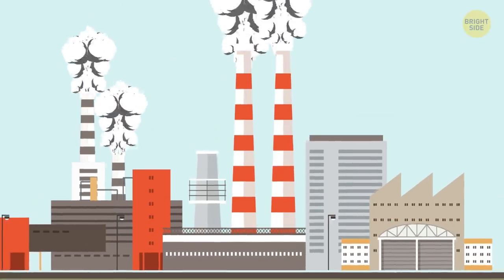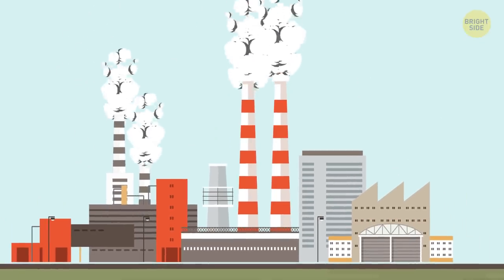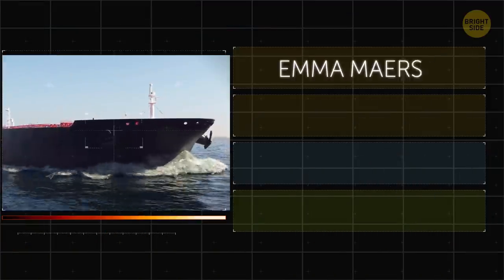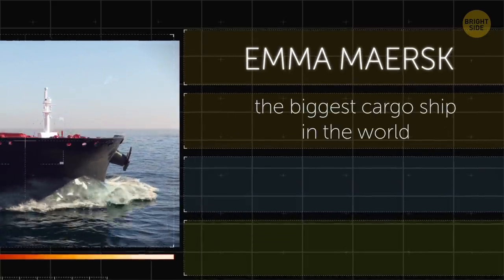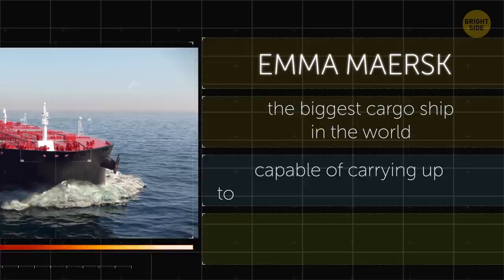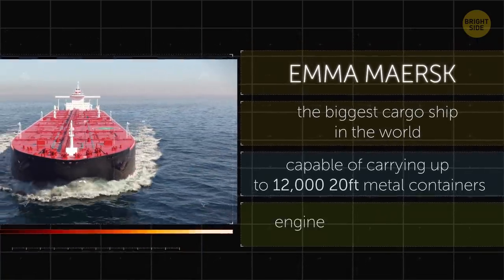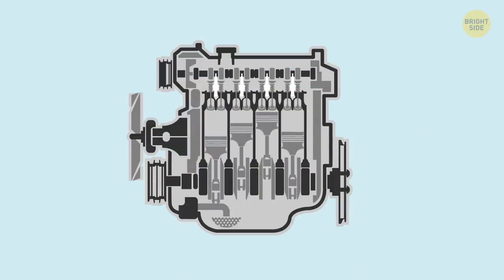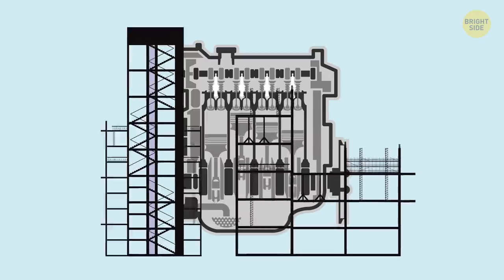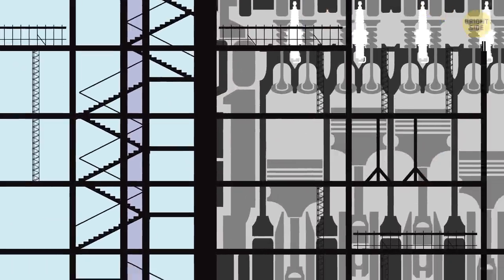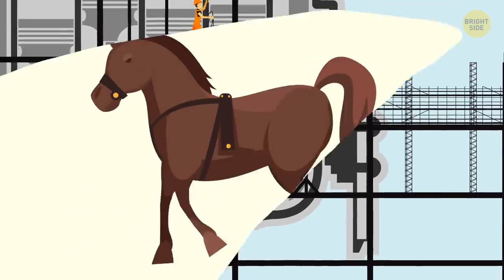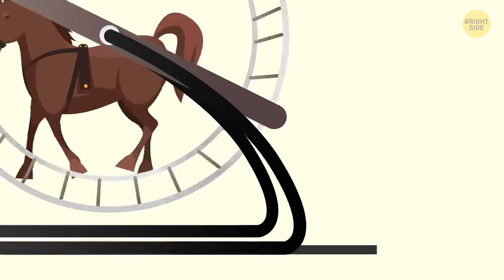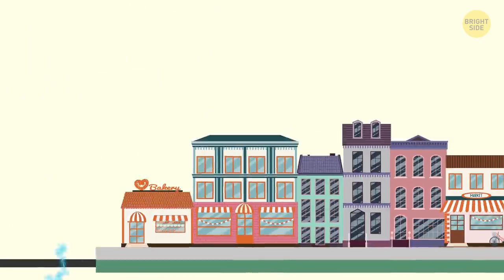The engines of big ships are huge powerhouses, taking up entire rooms and swallowing tons of fuel each day like it's a snack. Emma Maersk, the largest cargo ship in the world, capable of carrying up to 12,000 20-foot metal containers, has an engine that weighs 2,300 tons. When installed in the lower part of the ship, it takes a three-story construction built around it for the crew to be able to provide maintenance. It's capable of producing more than 100,000 horsepower output of engine power. Transferred to an energy value, that would be more than enough to power up a small city.